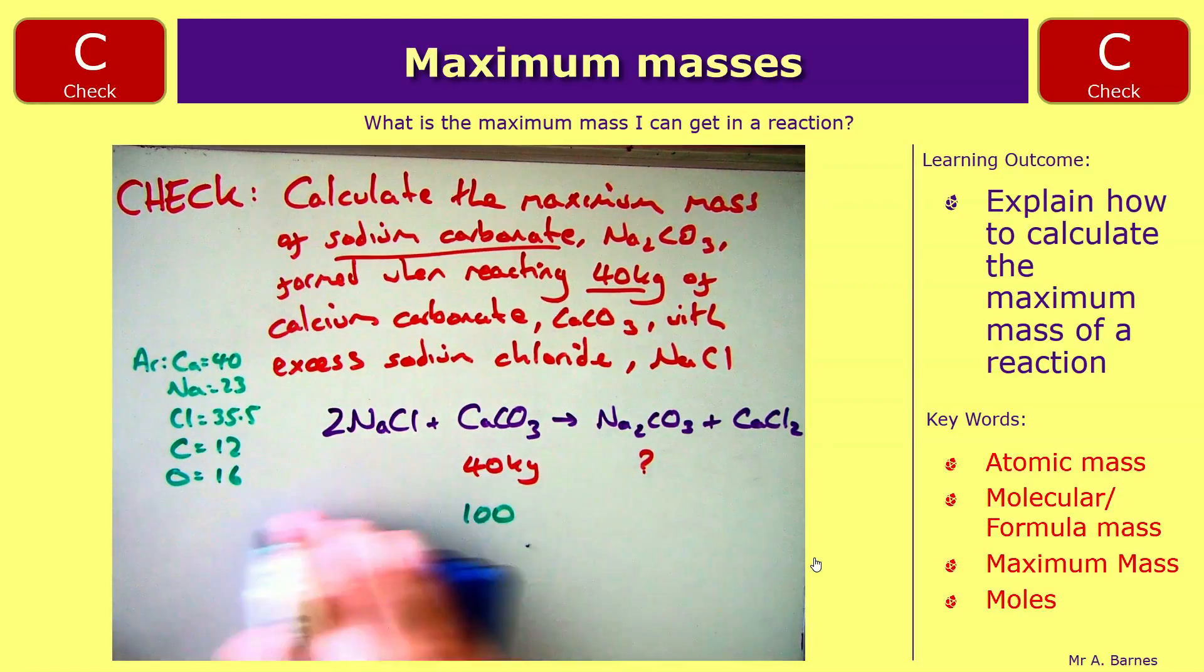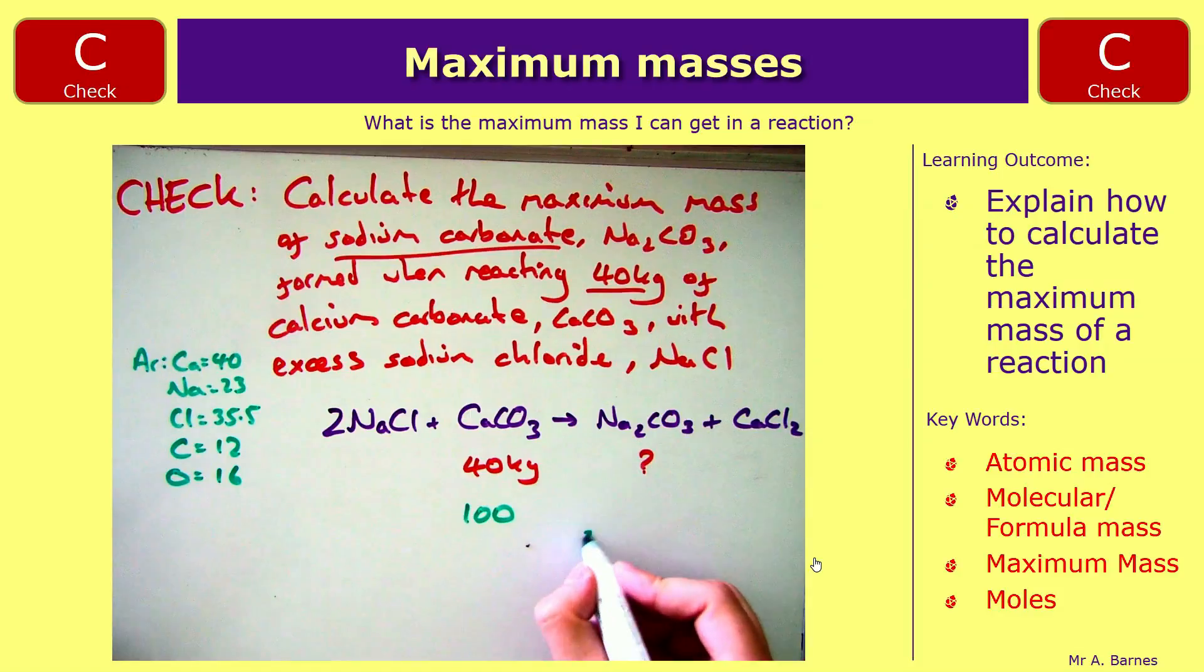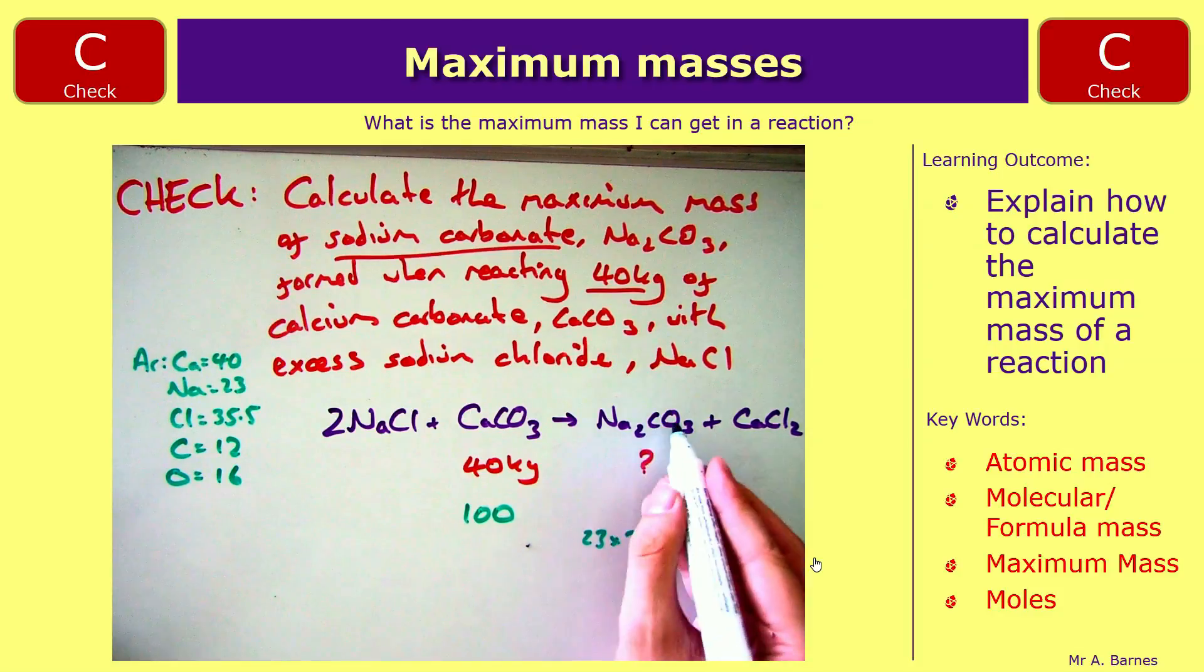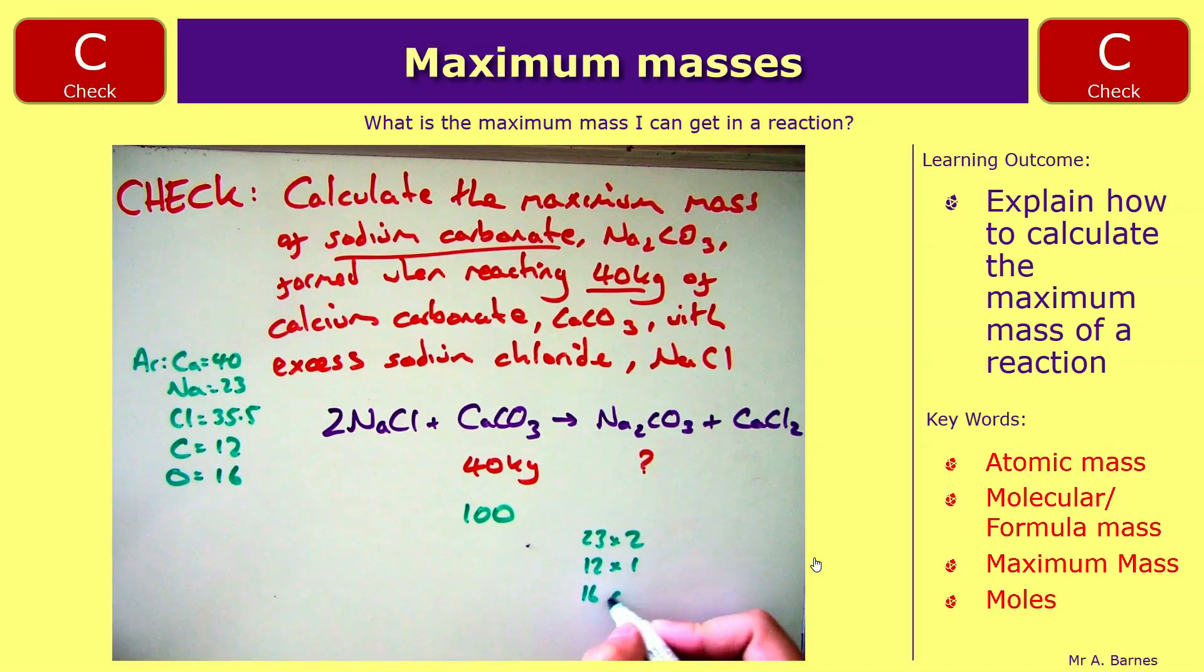Then I need to do the same with sodium carbonate. So I have Na2, so that's 2 times 23, 1 times carbon, so that's 1 times 12, and 3 times oxygen again, which is 3 times 16. So that's 46 plus 12 plus 48. And that gives me 106.